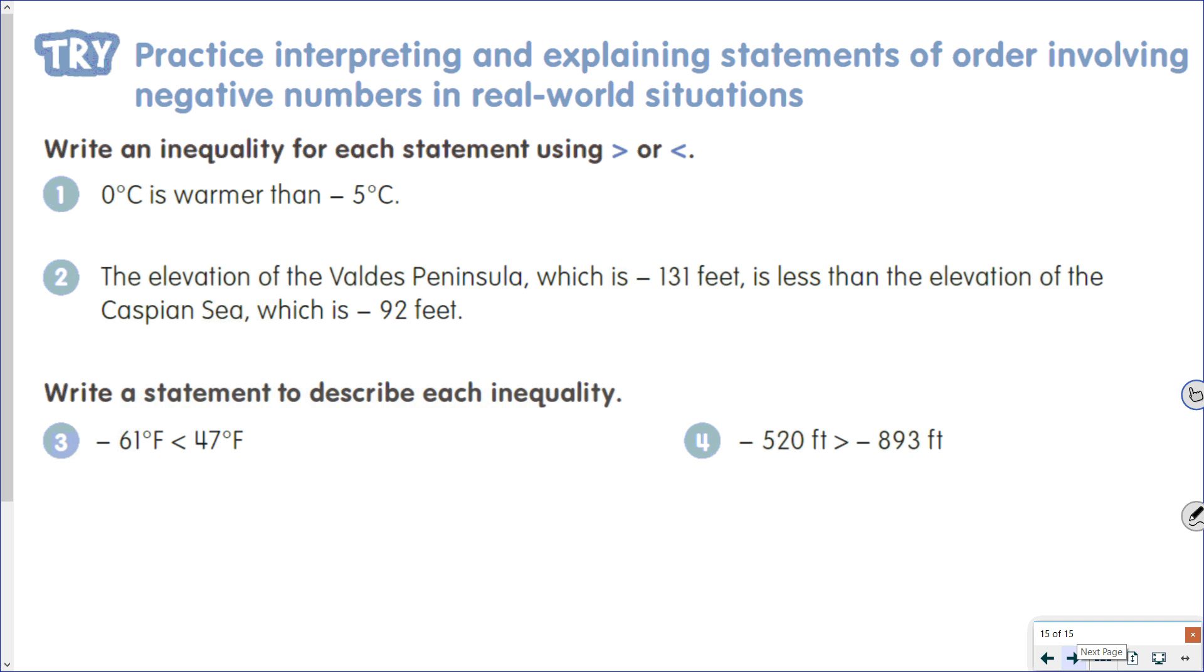If we want to write an inequality, 0 degrees Celsius is warmer than negative 5. So 0 is greater than negative 5.